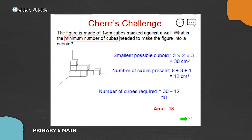When you say counting, I believe you counted the cubes one by one to fill it up — that works, but it's a tedious method and you can make errors. That's why I showed you this method: check the volume required — meaning the smallest possible cuboid — then subtract the number of cubes already given in the diagram. That gives you the minimum number of cubes required to top it up to get a cuboid.